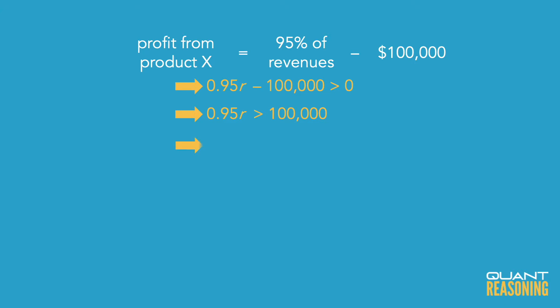If I want to make an inference about R, I would have to multiply both sides of the inequality by 100 and divide by 95 — or 20 over 19 if you reduce. So the total amount of revenues was more than 20/19 times $100,000.